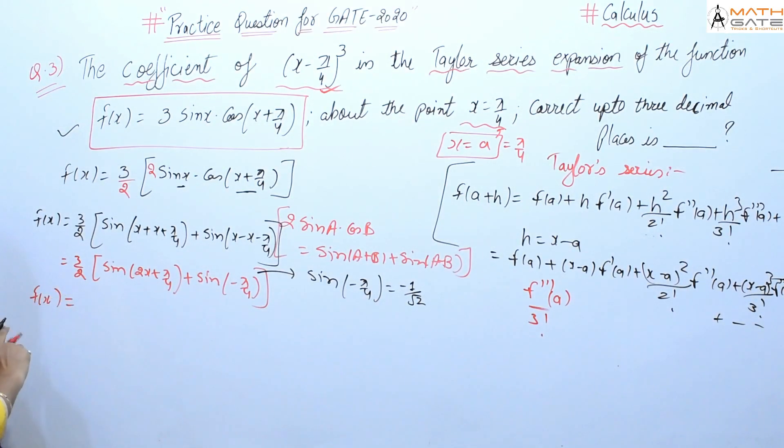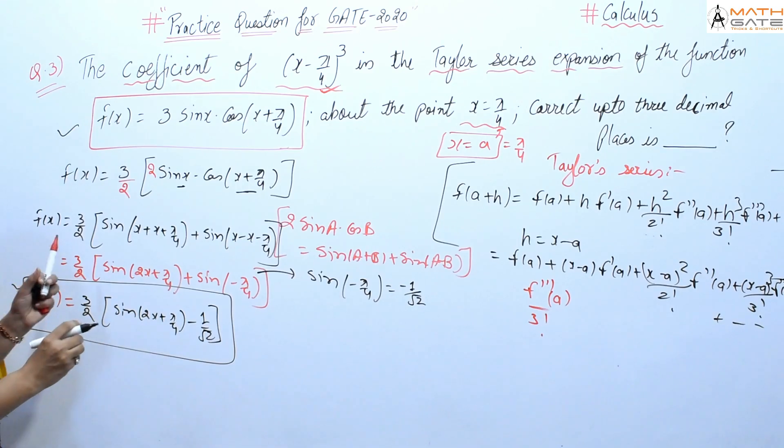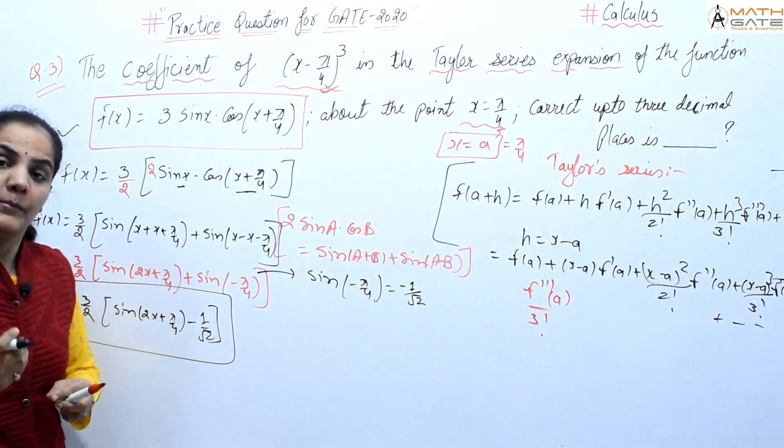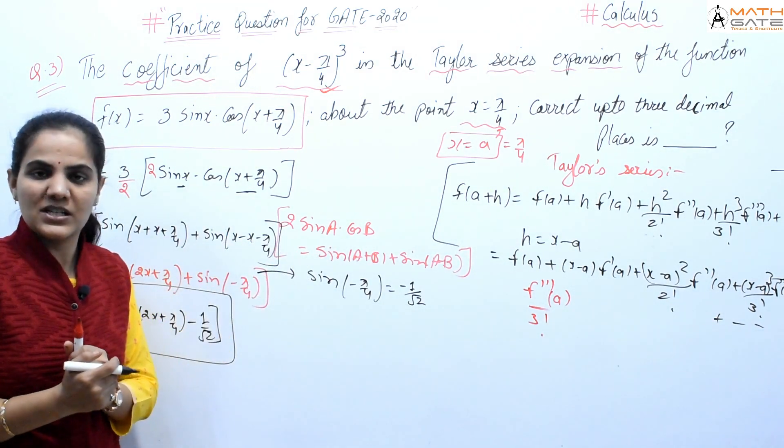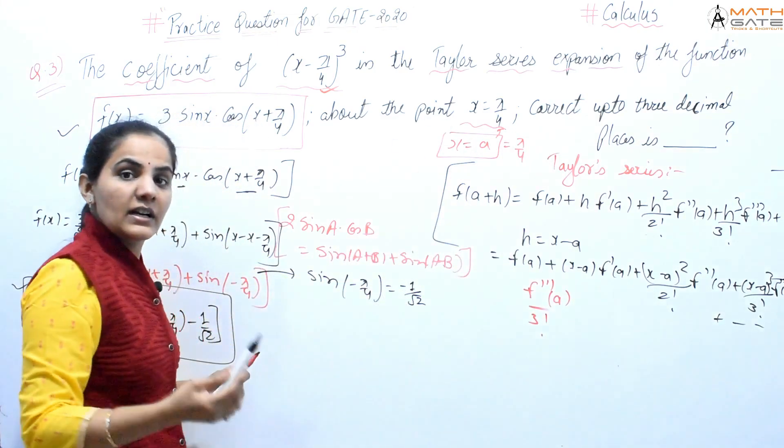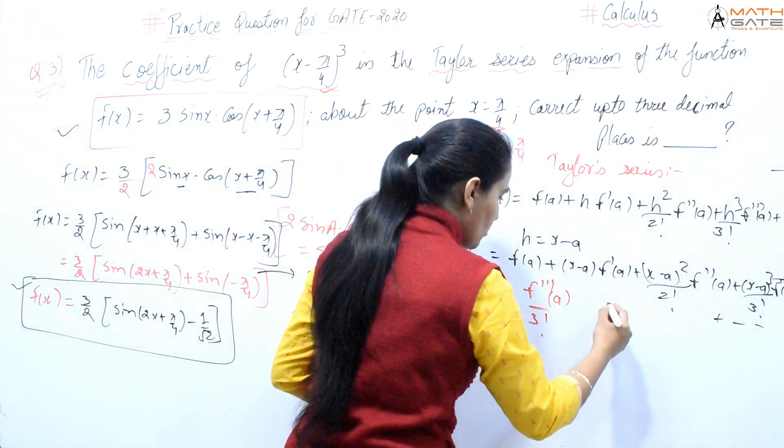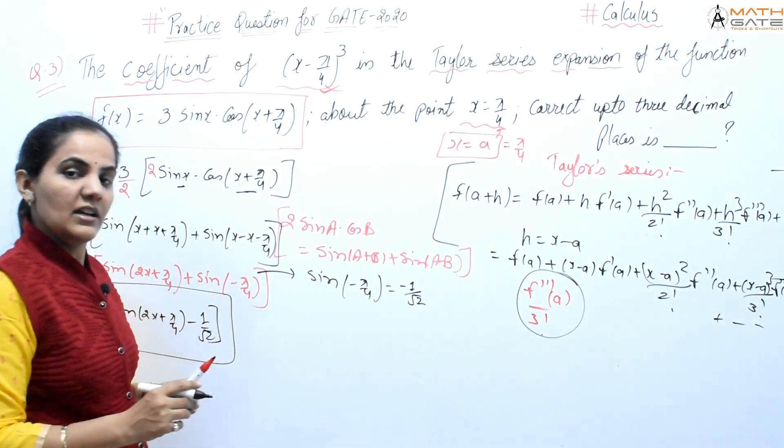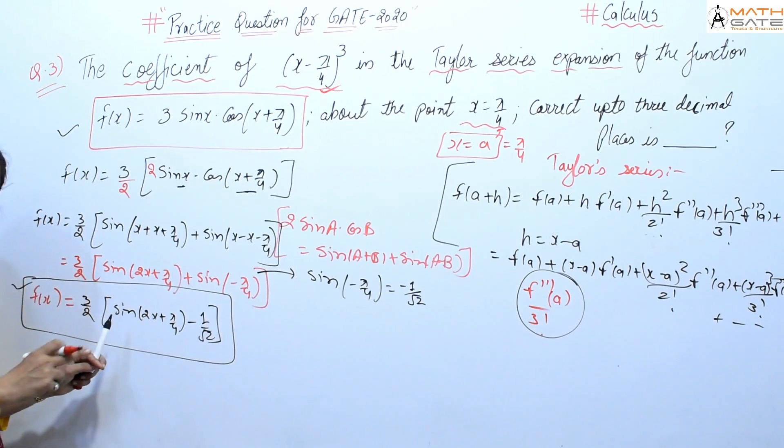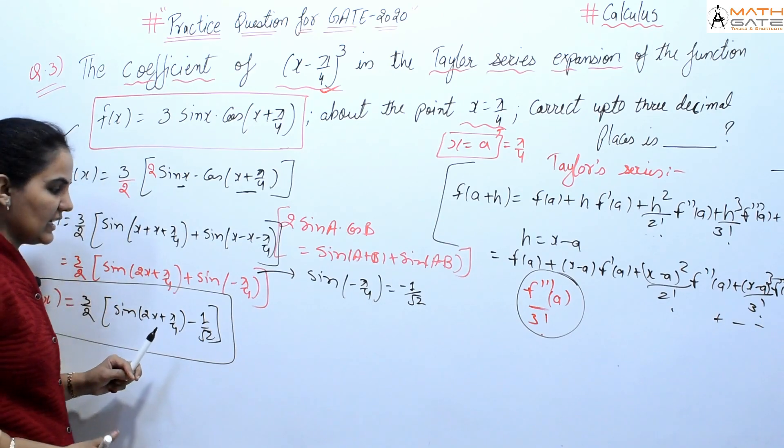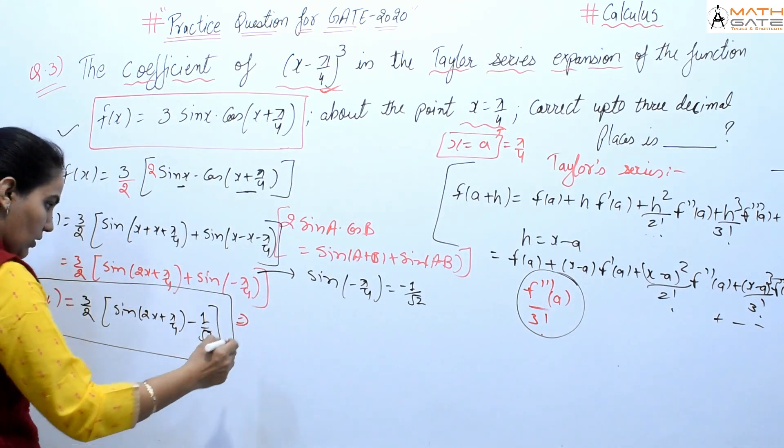Now from this f(x), I need to find the coefficient of (x - π/4)³, which means I need f'''(a)/3!. So from this f(x), I need to find the first derivative, second derivative, and third derivative.